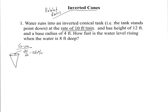The tank has a height of 12 feet and a base radius of 4 feet. The question asks: how fast is the water level rising when the water is 8 feet deep? So we want to find dh/dt — that's what we are looking for in this problem.